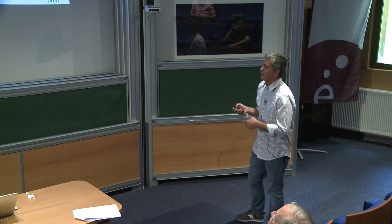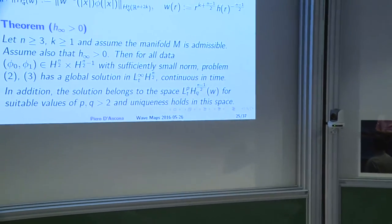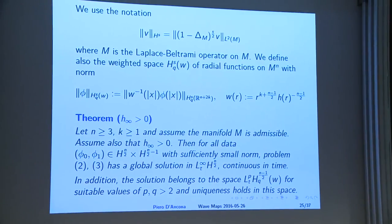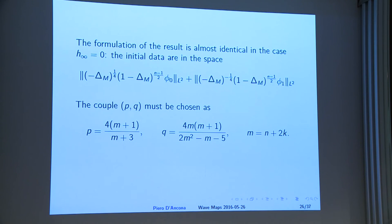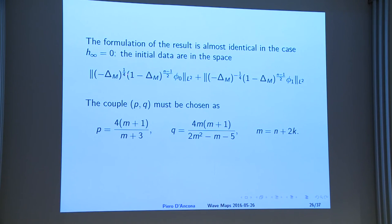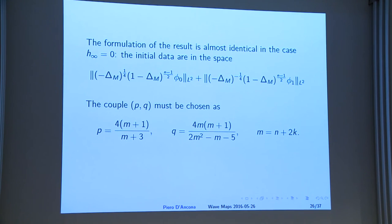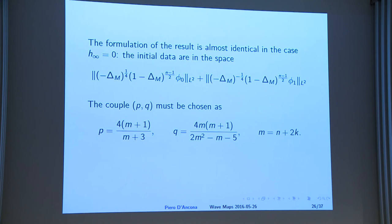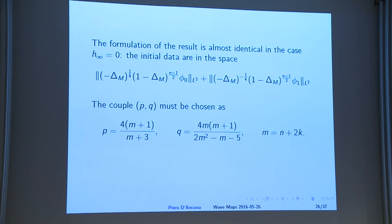Since we use Strichartz estimates, you get an additional property of the solutions and also an additional constraint for uniqueness — you can prove uniqueness only in a restricted Strichartz space. In the case h_infinity equals zero, you slightly modify the definition of H^s, meaning there is a small homogeneous part and the rest is non-homogeneous. There is not much freedom in the choice of Strichartz exponents appearing here, though probably other exponents could also work.